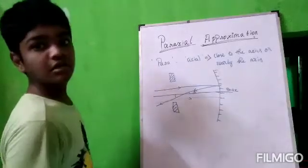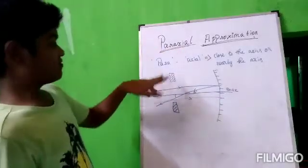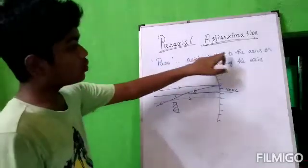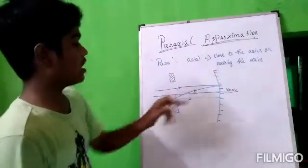Paraxial approximation. Paraxial can be defined as para and axial. Para is close, close to the axis, or nearby the axis.